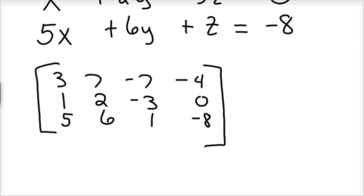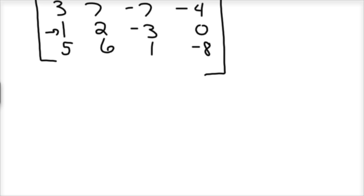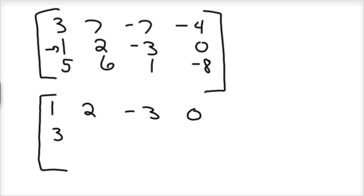Now we'll put it in reduced row form. What's nice is this 1 is at the beginning of row 2. So I'm going to swap my rows — flip-flop them so that row 2 becomes my row 1. So: 1, 2, negative 3, 0. Then 3, 7, negative 7, negative 4. And row 3 just stays the same: 5, 6, 1, negative 8.